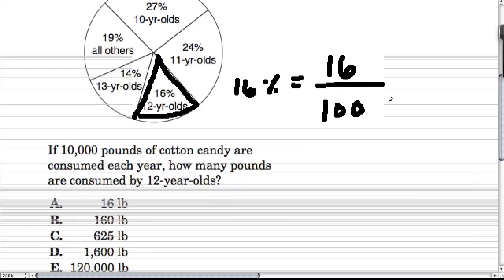Well, now we have 10,000, so that means we take 100 and multiply it by another 100. So that means you also should multiply 16 by 100. And then we have 1,600 12-year-olds, 1,600 pounds of cotton candy are consumed by 12-year-olds each year.